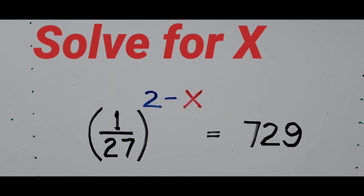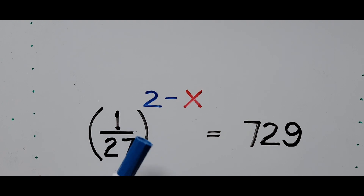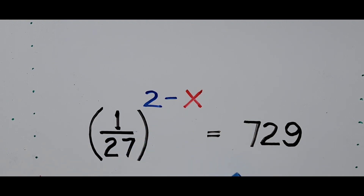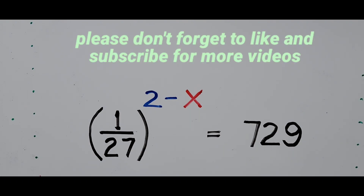Hello everyone! Welcome to Cassiano Easy Math. Today's video is about solving another exponential equation: (1 over 27) raised to the power 2 minus x equals 729, and we're going to find the value of x. For those new to my channel, please don't forget to like and subscribe for more videos.